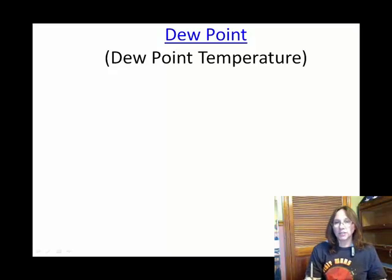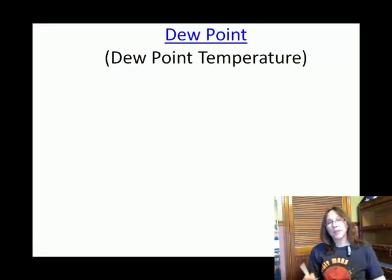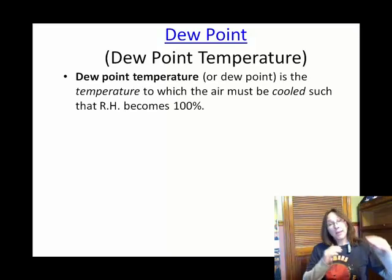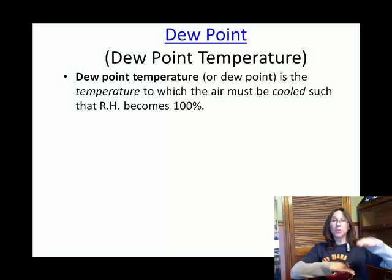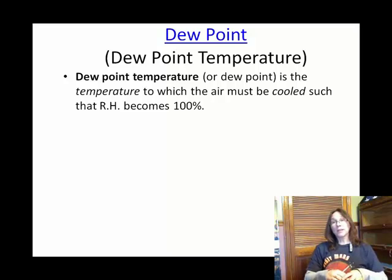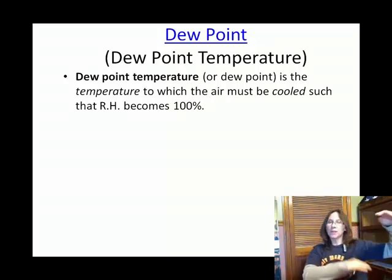The last indication of water vapor in the atmosphere is dew point, specifically dew point temperature. The dew point temperature is the temperature you need to cool down to in order for the air in the atmosphere to reach saturation — to cool down to the point of 100% relative humidity. We said that we can take a parcel of air and cool it down to reach 100% relative humidity. That's what dew point temperature is.